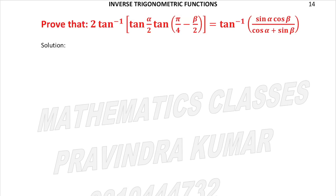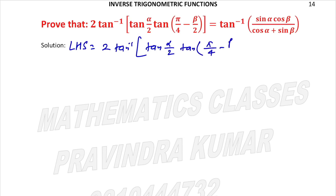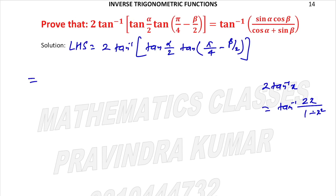Prove that 2 tan inverse of (tan(α/2) · tan(π/4 - β/2)) equals tan inverse of (sin α · cos β) upon (cos α + sin β). This is a very important inverse trigonometric function question. We will start with LHS. LHS is 2 tan inverse of (tan(α/2) · tan(π/4 - β/2)). Now we apply the 2 tan inverse x identity: 2 tan inverse x = tan inverse (2x / (1 - x²)), because RHS is tan inverse.